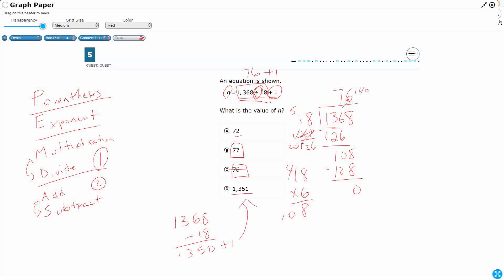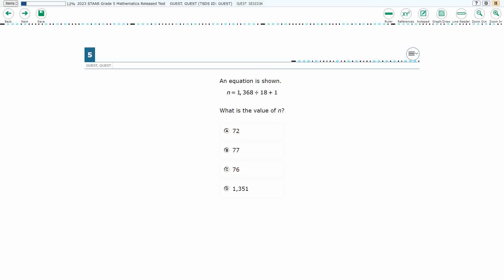What about that 72? Where's that coming from? Well, what if we didn't do the operations in order from left to right? What if we actually added first? We did that first. Well, now that would be 1368 divided by 19. And actually, if you work it out, it's 72 equally. So all of these incorrect answers are possible choices. But our answer here is going to be B, 77.